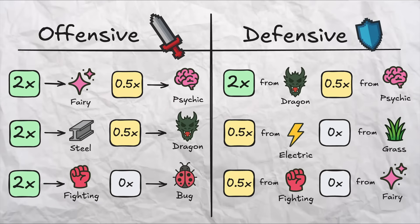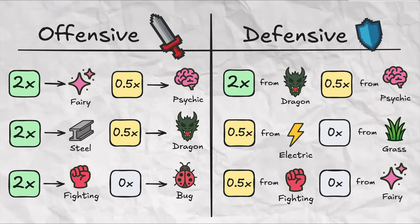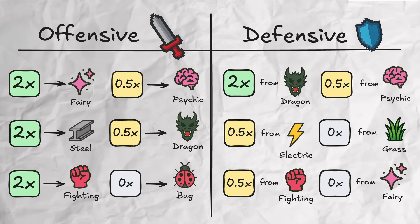Offensively, this new type hits Fighting, Steel, and Fairy for super effective damage, hits Psychic and Dragon for half effective damage, and cannot hit Bug.